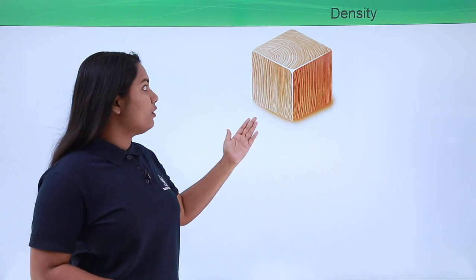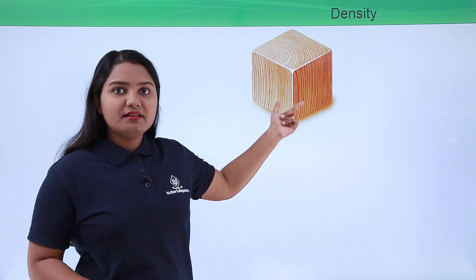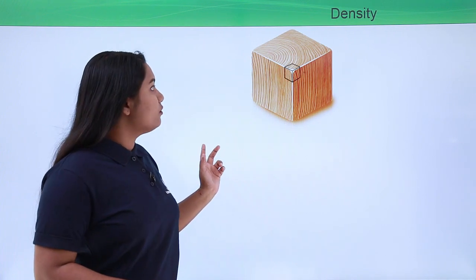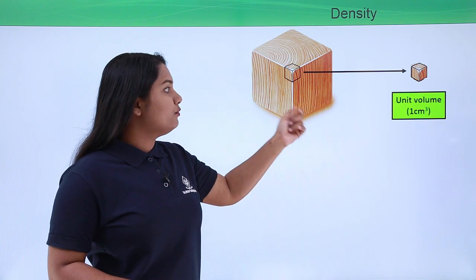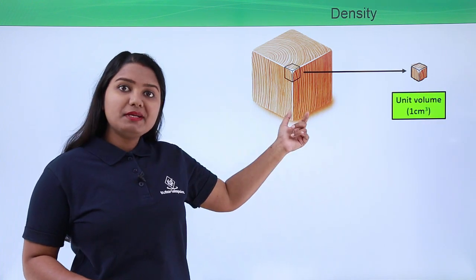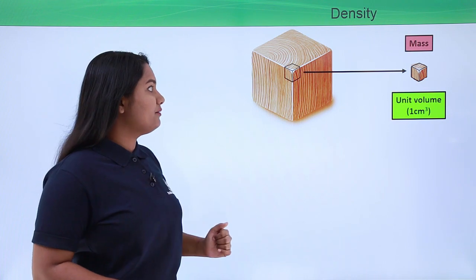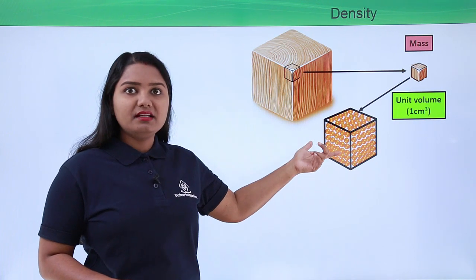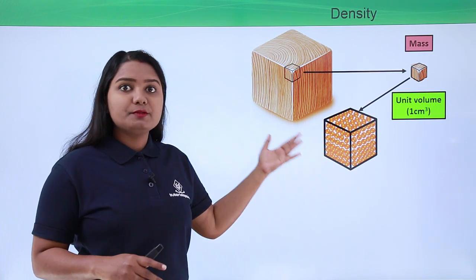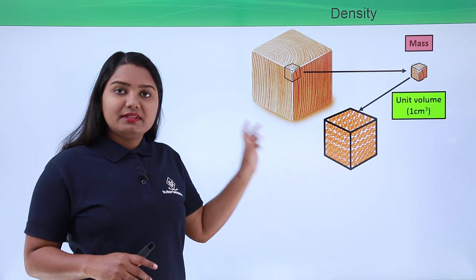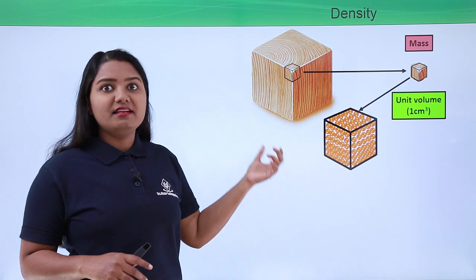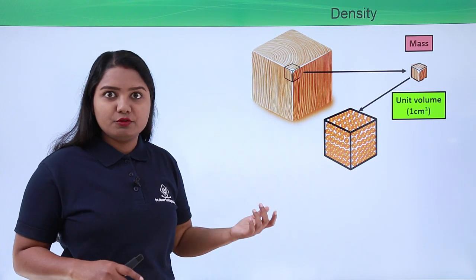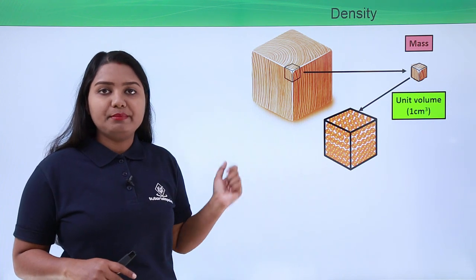Suppose we have a wooden block and we want to take out a piece out of it which has a volume of 1 cm cube. On cutting out such a piece, we have this piece with volume 1 cm cube, which is a unit volume, and this piece must be having some mass. When we zoom in on this piece, we see that it has a structure where the particles are stuffed into it, and these particles must be having some mass. This amount of mass which is contained in a volume of 1 cm cube, or any kind of unit volume like 1 m cube, is what we call the density of that particular substance.